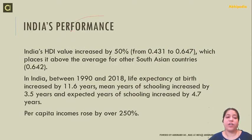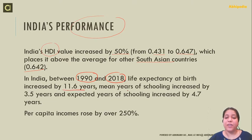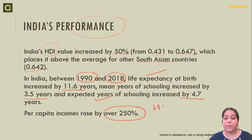India's Human Development Index value has increased by 50%, from 0.431 to 0.647, which is above the South Asian average of 0.642. Between 1990 and 2018, life expectancy at birth increased by 11.6 years, mean years of schooling increased by 3.5 years, and expected years of schooling increased by 4.7 years. Per capita income has risen by over 250%, so overall India's Human Development Index has risen significantly.